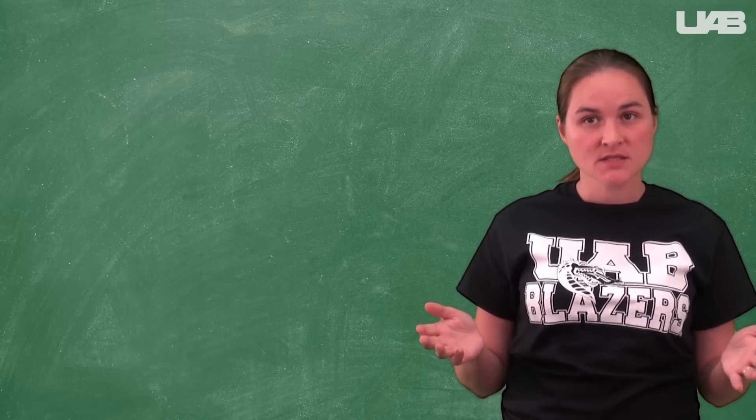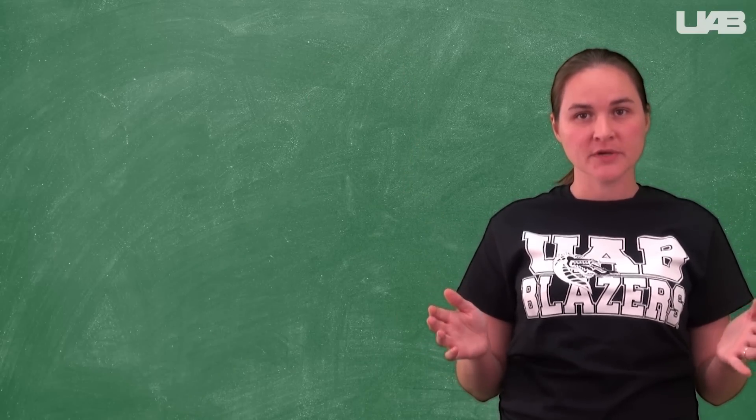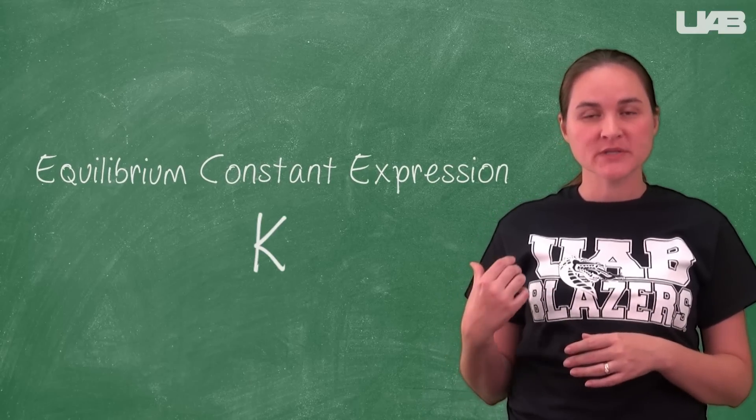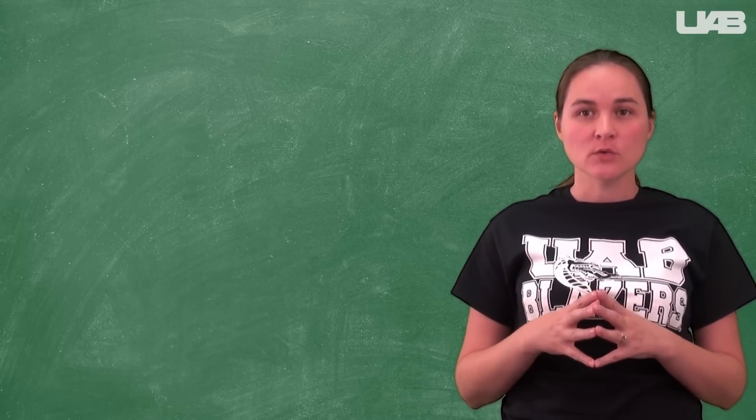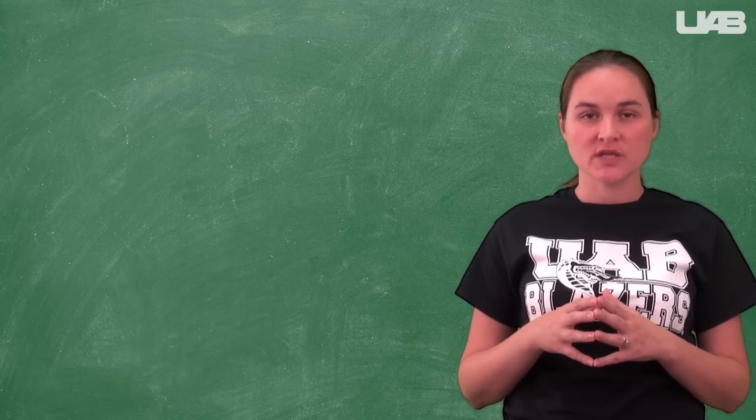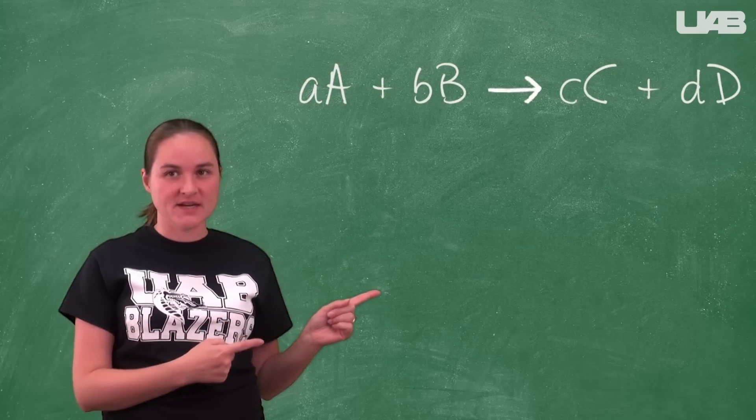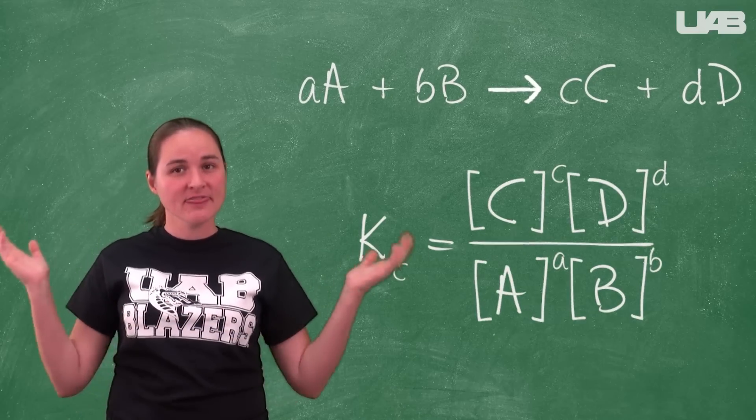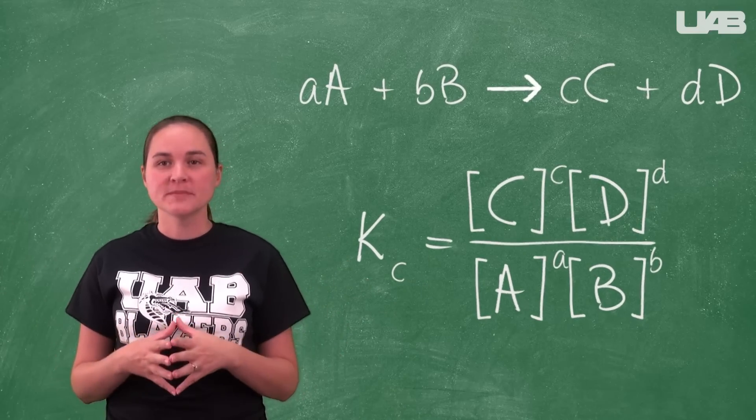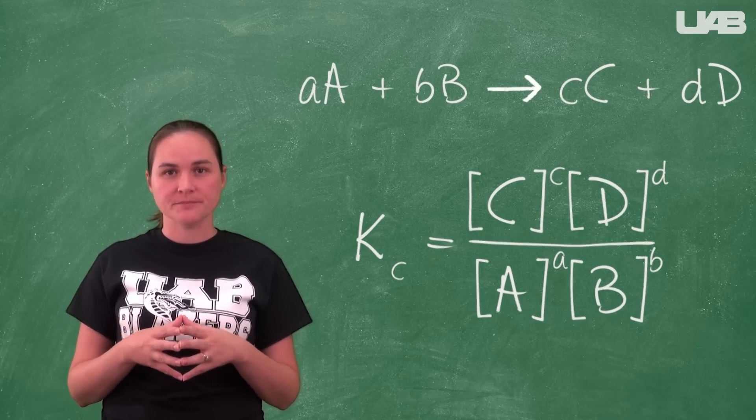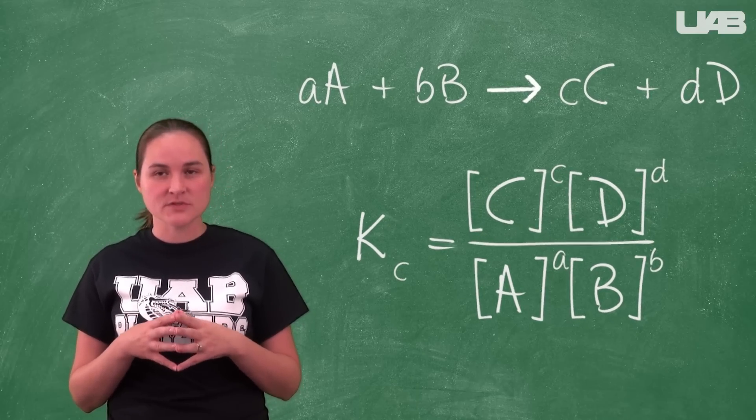To represent how the products and reactants are related at equilibrium, we write an equilibrium constant expression, which is denoted with a capital K. Equilibrium expressions are written as products over reactants raised to their stoichiometric coefficients. Look at this generic reaction. The equilibrium constant expression would be this. You should be comfortable writing these expressions for any equilibrium reaction you encounter. You can find lots of examples in a chemistry textbook.